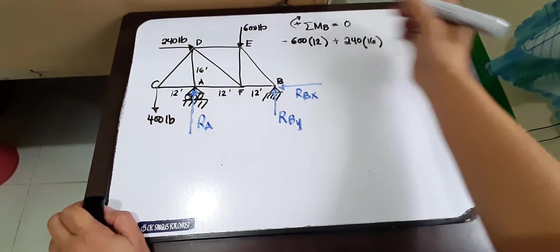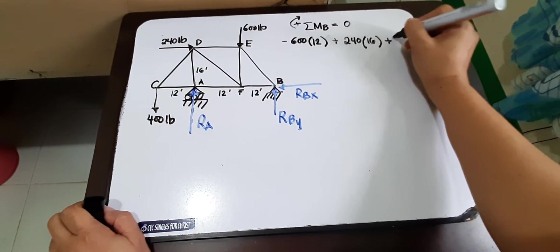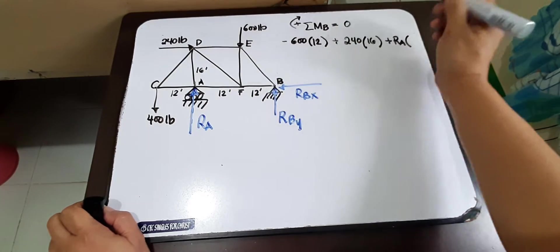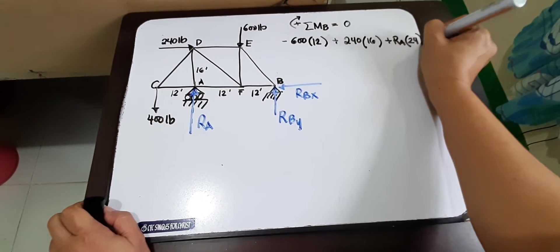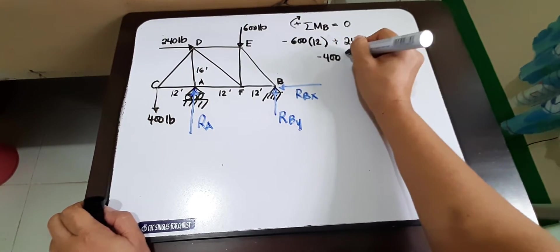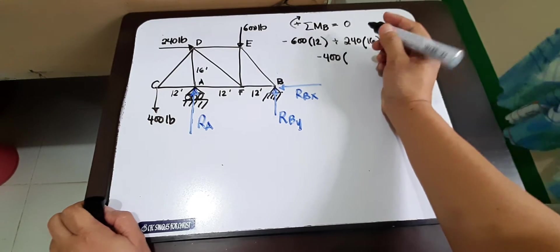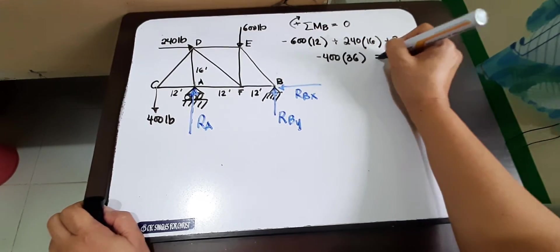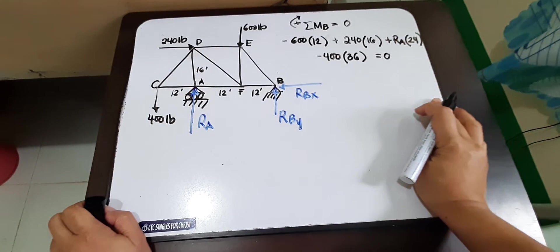And then we have another positive RA multiplied by the moment arm, which is 24. And then we have 400, and that will create a counterclockwise, multiplied by 12 times 3, so we have 36. And that would be equal to zero.